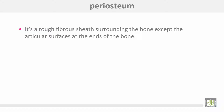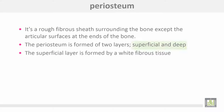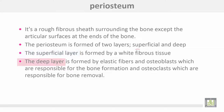The periosteum is a rough fibrous sheath surrounding the bones except at the articular surface at the ends of the bone. The periosteum is formed by two layers: a superficial layer and a deep layer. The superficial layer is formed by white fibrous tissue. The deep layer is formed by elastic fibers and osteoblasts, which are responsible for bone formation, and osteoclasts, which are responsible for bone removal.